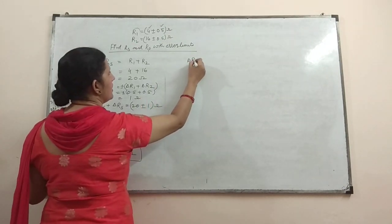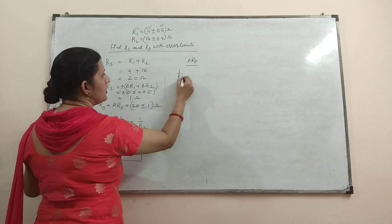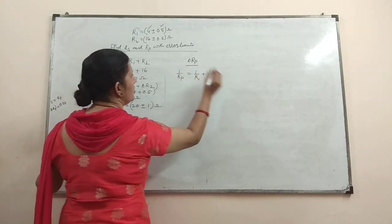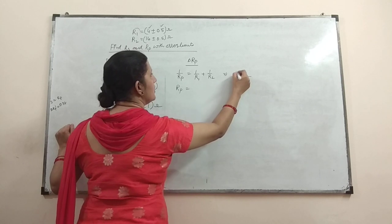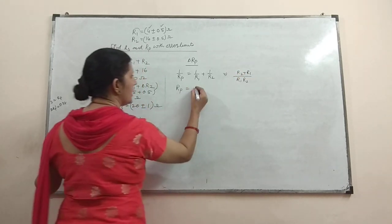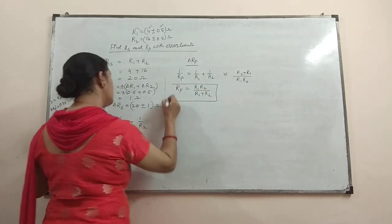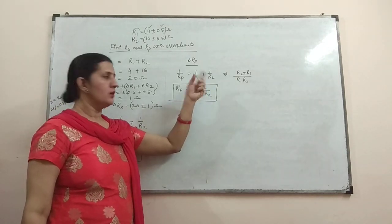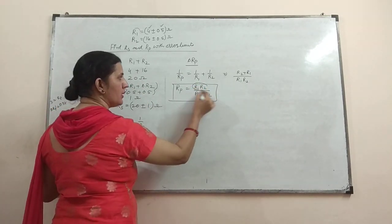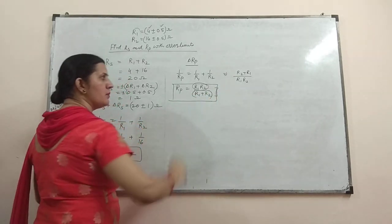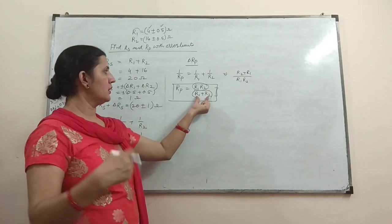You have to find delta Rp — this is the most important term. How to calculate? Here you can see 1 by Rp is equal to 1 by R1 plus 1 by R2. Taking LCM, Rp comes out to be R1 R2 divided by R1 plus R2. You have the product function, you have the division function, but there is no formula which collectively handles the product, the division, and the sum in the numerator or denominator. So this factor makes it a different question.